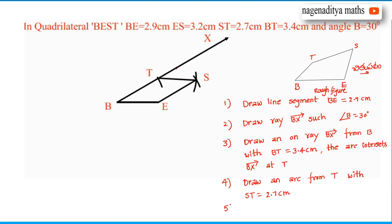Fifth step: Draw another arc from point E with radius ES equal to 3.2 centimeters. The intersection of these two arcs gives point S.